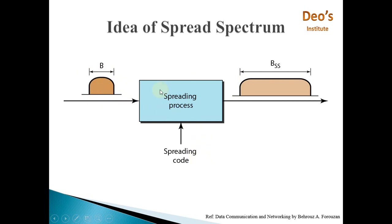We just need to increase the bandwidth of this data by applying the spreading code. This is the original data. This is the spreading code. After adding the spreading code, we get this much bandwidth — data with increased bandwidth. This BSS is very, very greater than B, and this allows the message to be transferred securely to the destination without intervention.